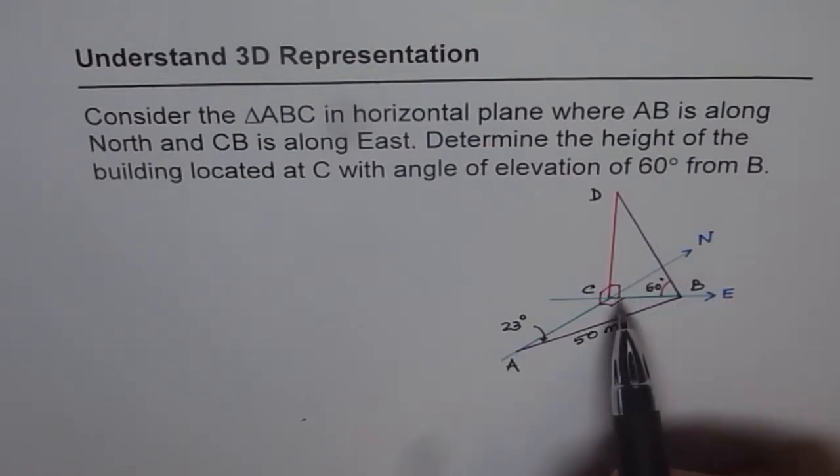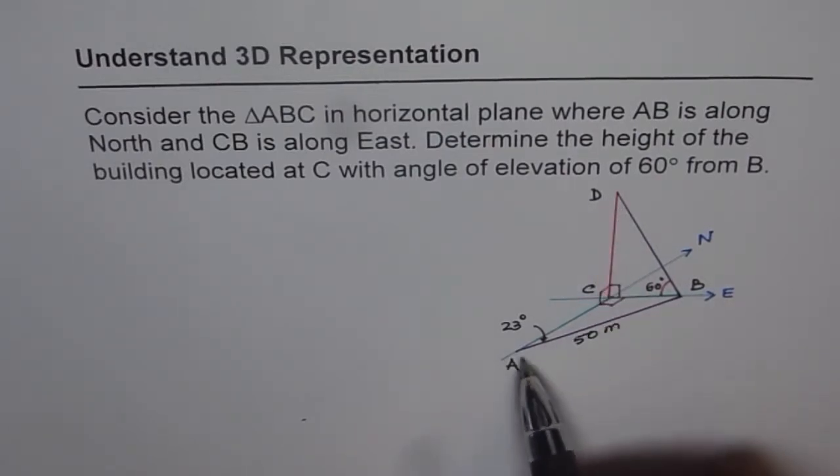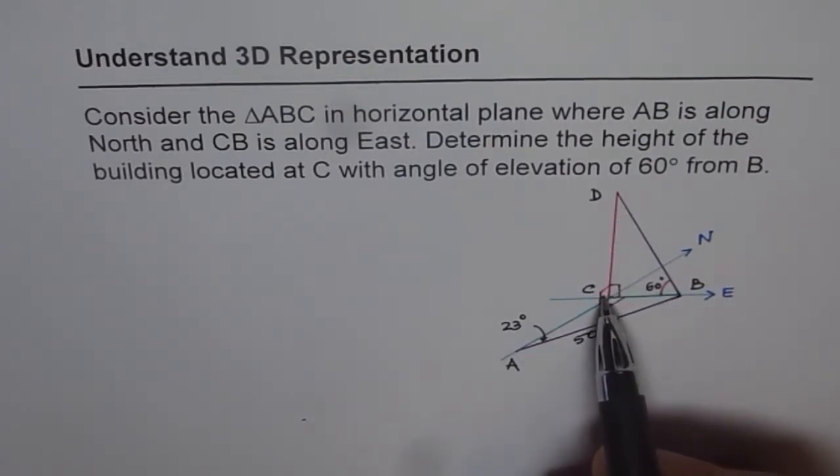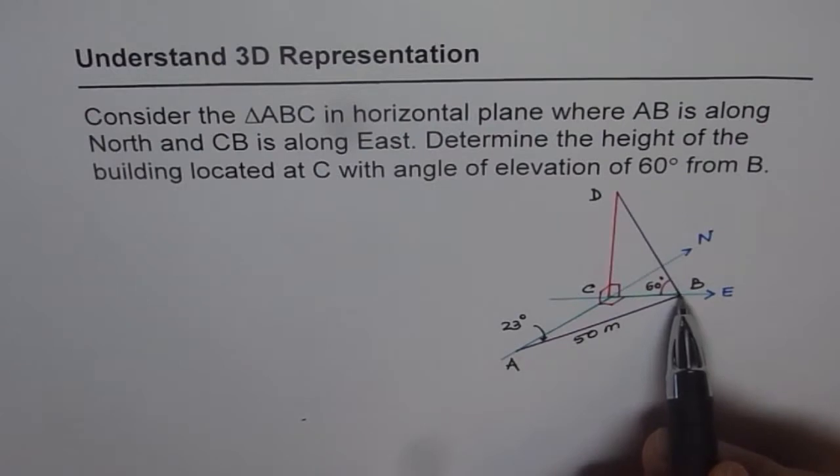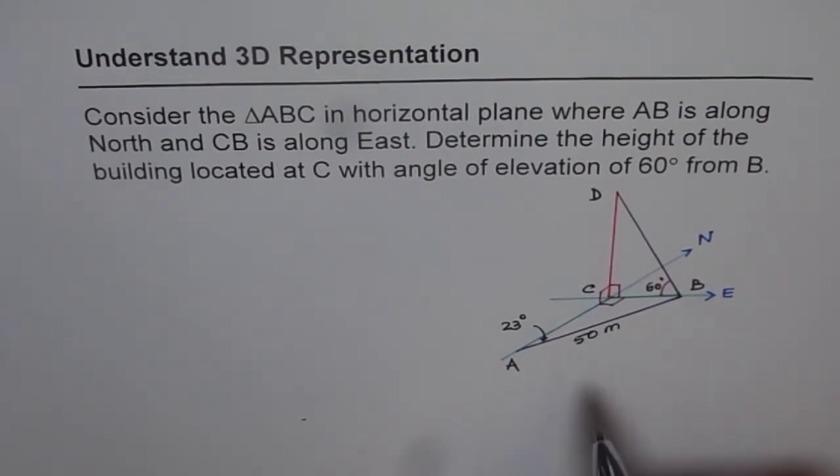As you can note here, angle between CD and this triangle is 90 degrees, both ways. And the triangle itself, since the sides are along north and east, makes an angle of 90 degrees at the vertex C. So these are the points which you should appreciate.